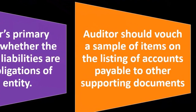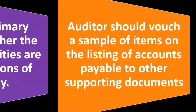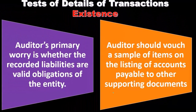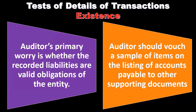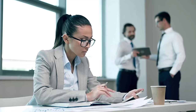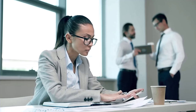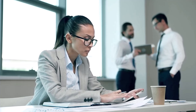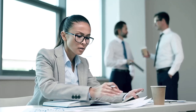For the existence assertion, auditors should vouch a sample of items on the listing of accounts payable to the supporting documentation. We take the information from the end result and vouch it back to the source documentation, which helps us verify that what is recorded on the books actually happened — going from the end result back to the past.